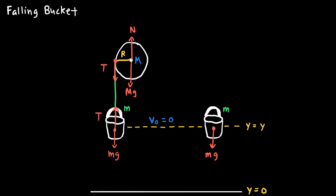Similar to how a table pushes up on an object resting on it, the axle exerts an upward normal force on the pulley. If the positive y direction is upward, Newton's second law for the pulley gives: N minus T minus mg equals zero, since the acceleration is zero. This tells us the normal force equals the tension plus the weight of the pulley.